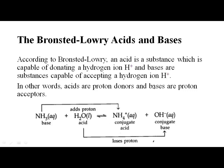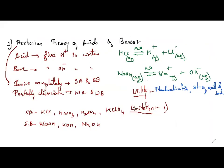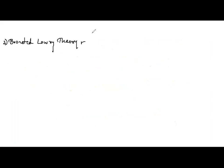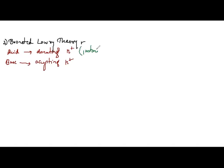According to Bronsted-Lowry theory, acids are proton donors and bases are proton acceptors. For example: HCl + H₂O → H₃O⁺ + Cl⁻. Here HCl donates a proton to H₂O and becomes Cl⁻, so HCl is the acid. H₂O accepts the H⁺ ion and becomes H₃O⁺, so H₂O acts as a base here.